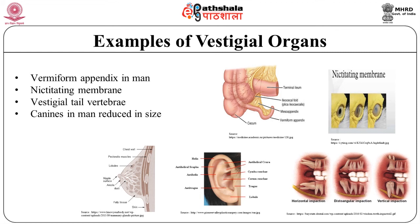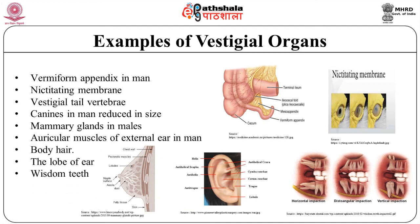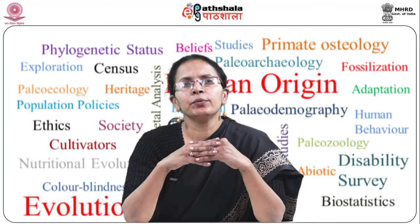Some vestigial organs found in humans include: the vermiform appendix, auricular muscles of the external ear, the nictitating membrane, vestigial tail vertebrae, the lobe of the ear, wisdom teeth, canines reduced in size, mammary glands among males, and body hair.